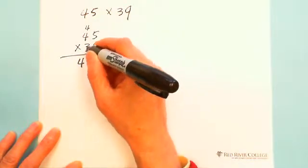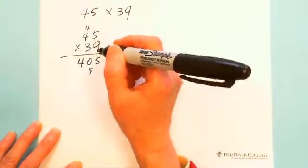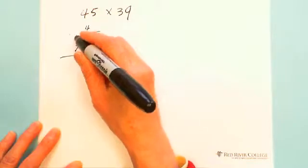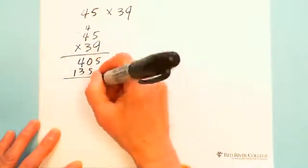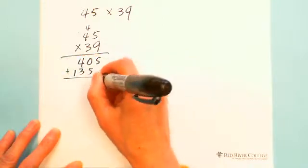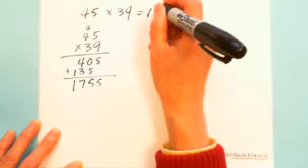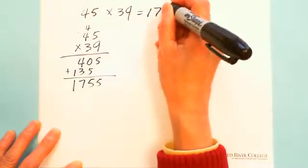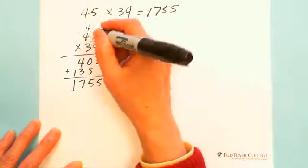Then next is 3 × 5 is 15. You mark 5 and carry 1. 3 × 4 is 12 plus 1 is 13. You have carry over carry over. Then you add the numbers and get 1755. So this is carry over carry over, easy to make mistakes.